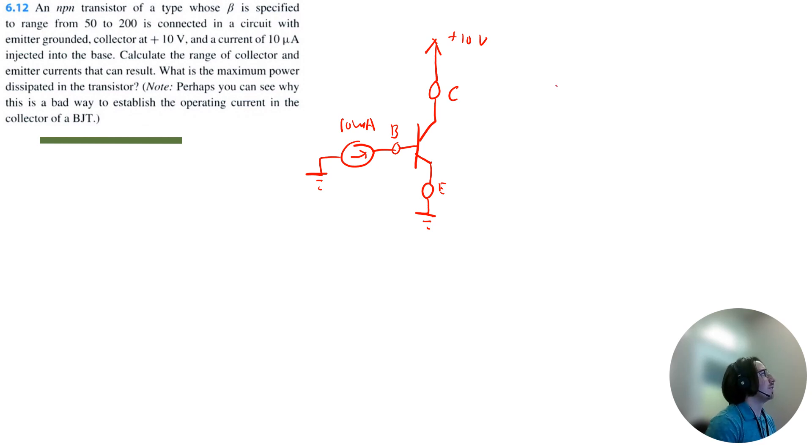So let's draw the EBJ and the CBJ because we need to determine the region of operation that this BJT is operating in. That way we know what equations we can use to solve for the current.